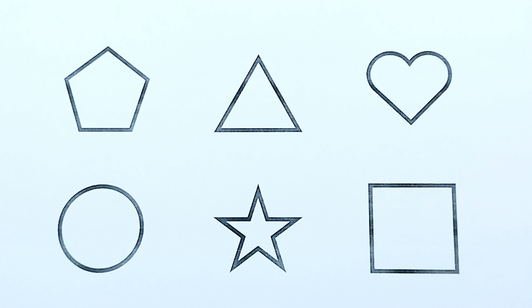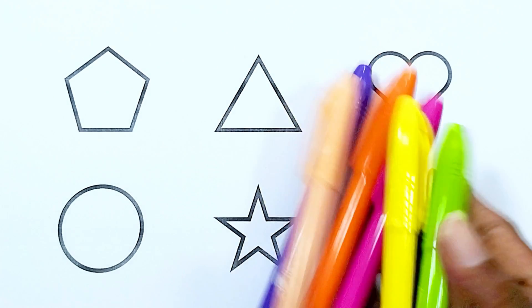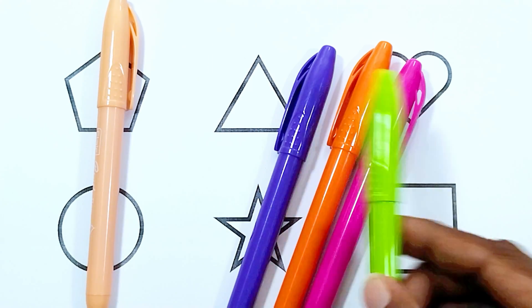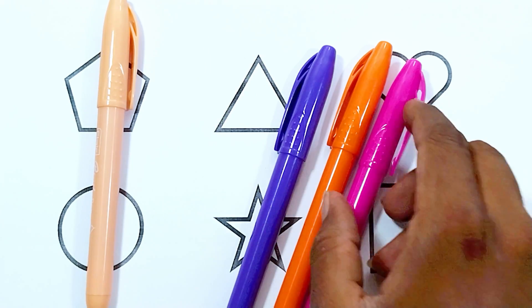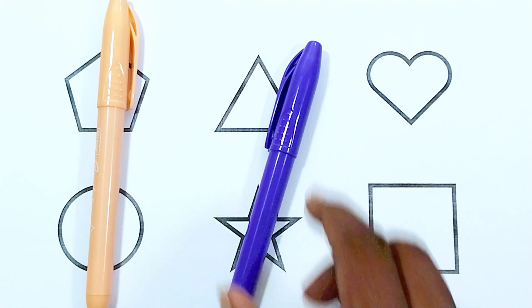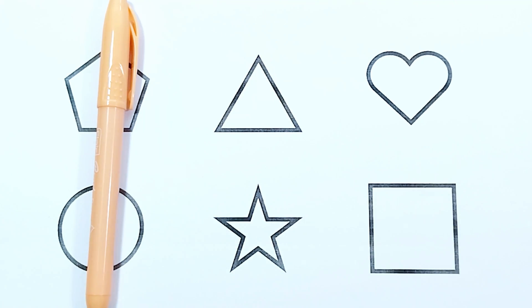Today we are going to learn about some shapes and colors. The colors are yellow color, green color, pink color, orange color, blue color,